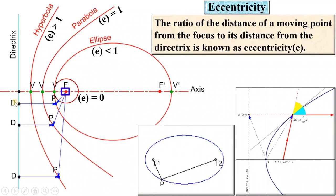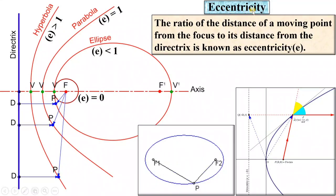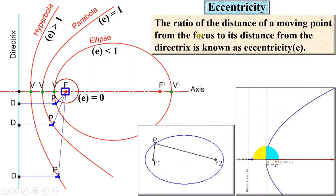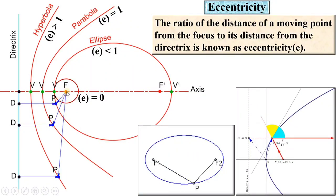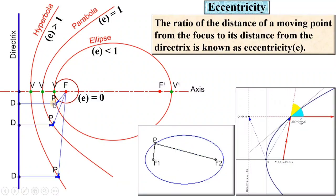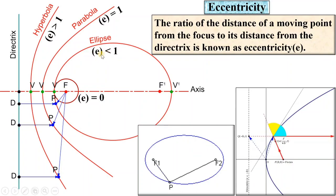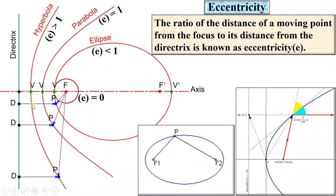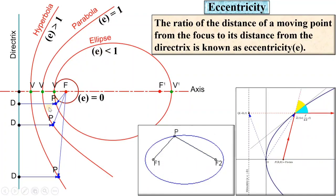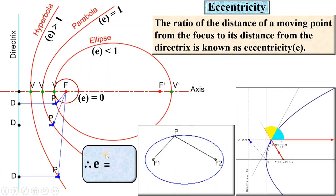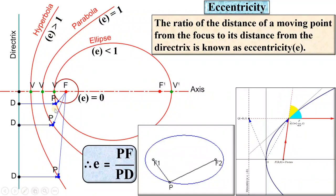With respect to the focus point and directrix, the distance of the moving point P is used to define the eccentricity. Eccentricity e is equal to PF upon PD, where the distance from P to the directrix is always perpendicular to the directrix. In the case of ellipse, eccentricity is always less than 1, because PF is less than PD.